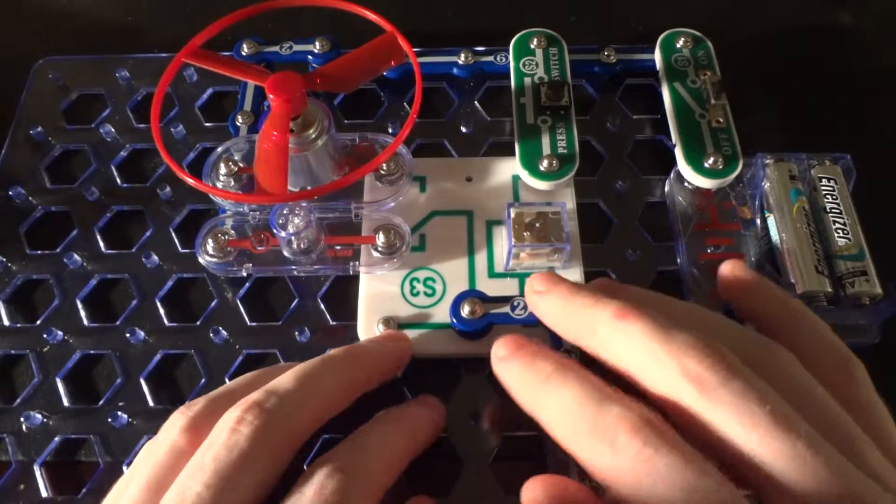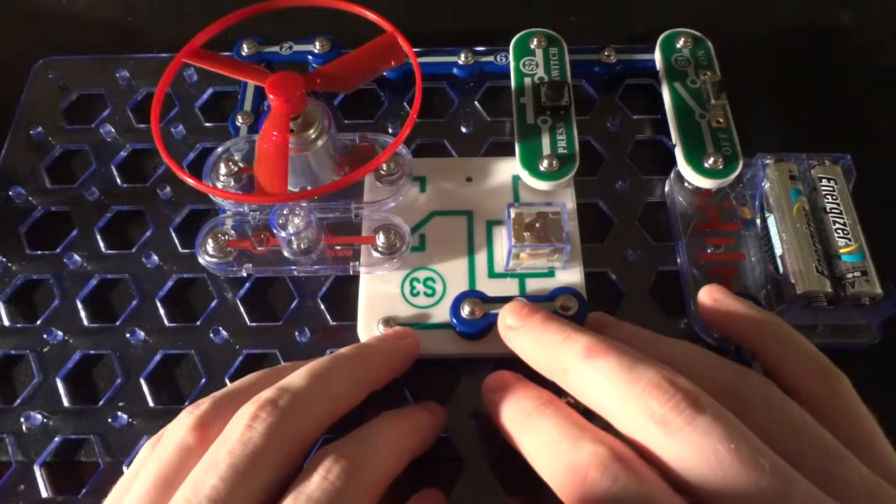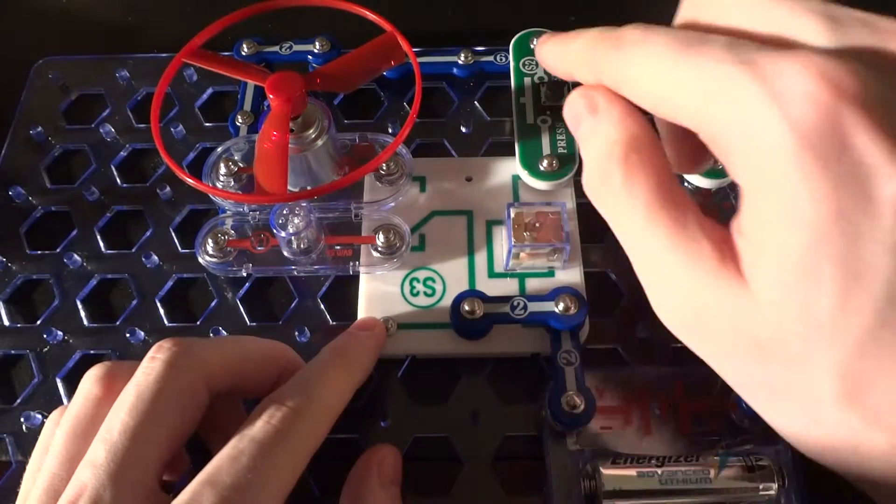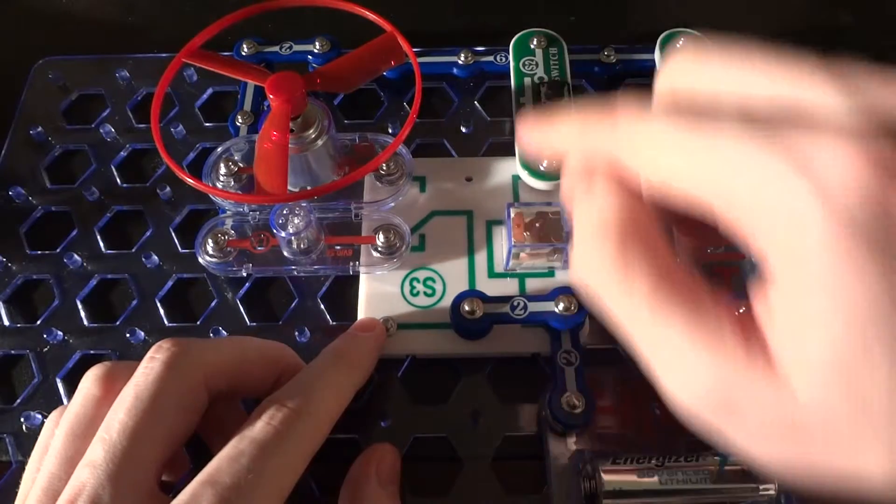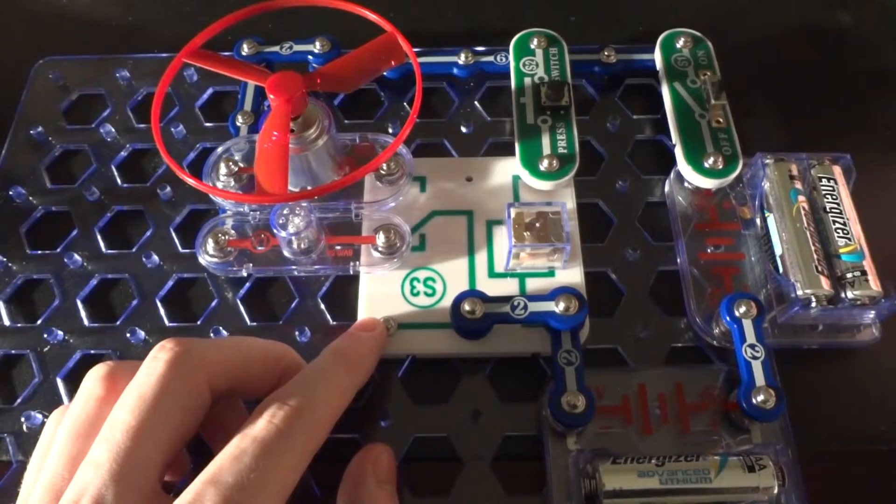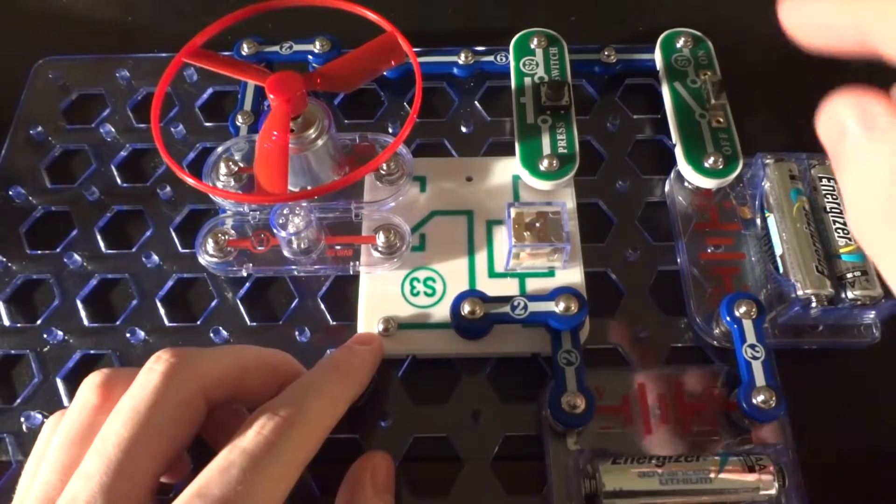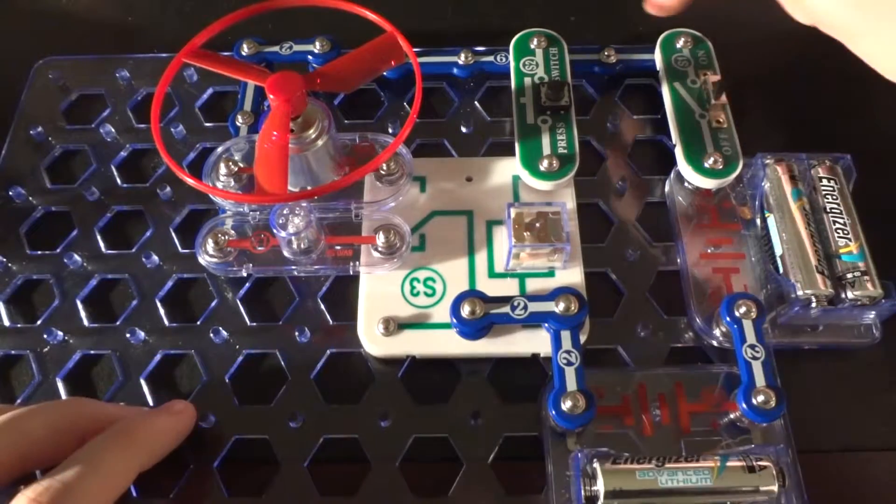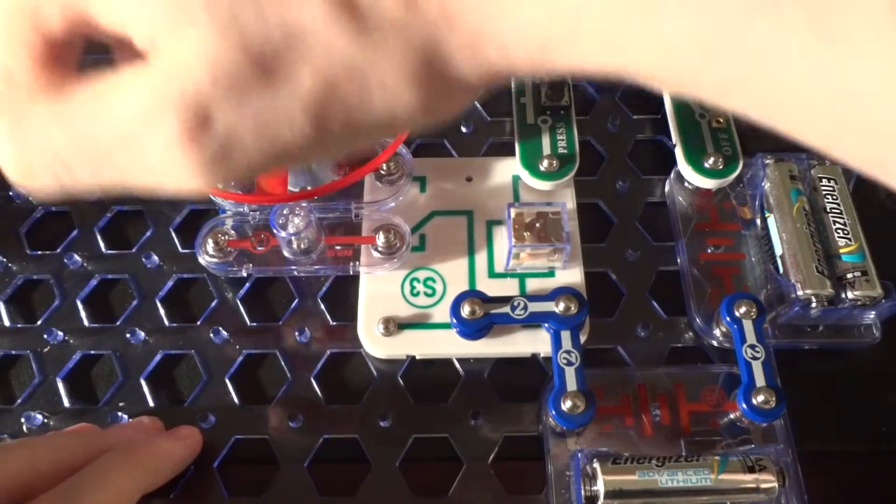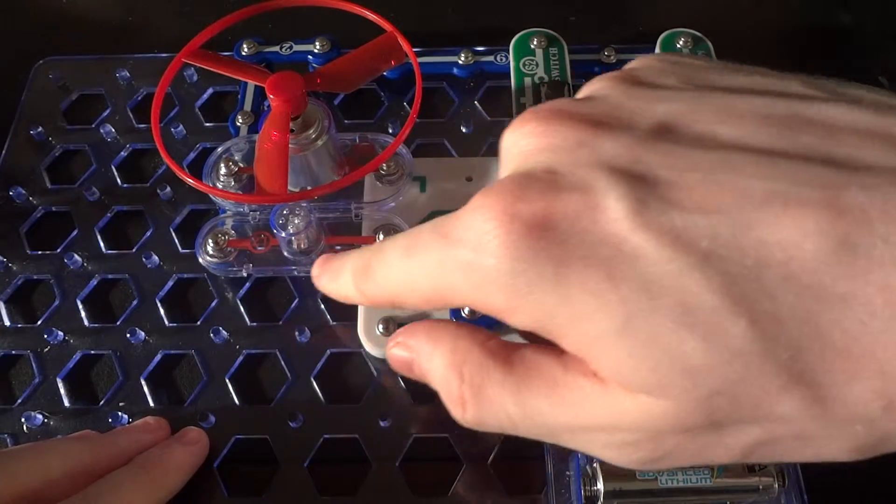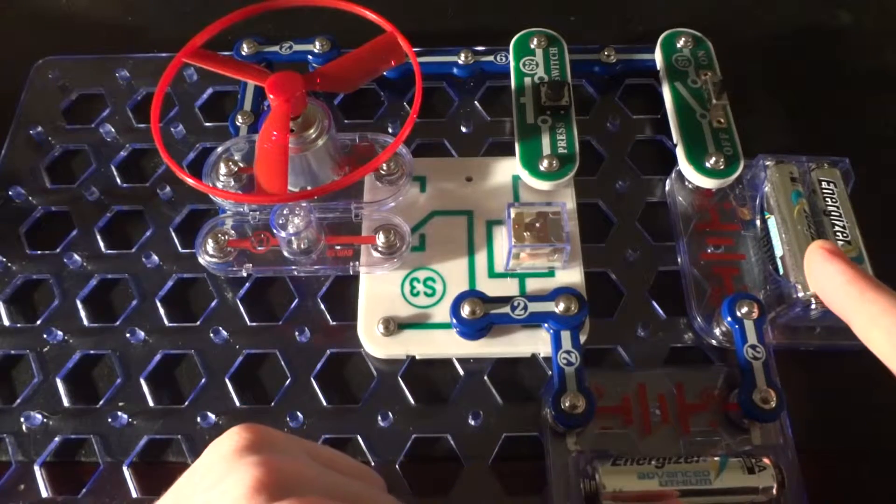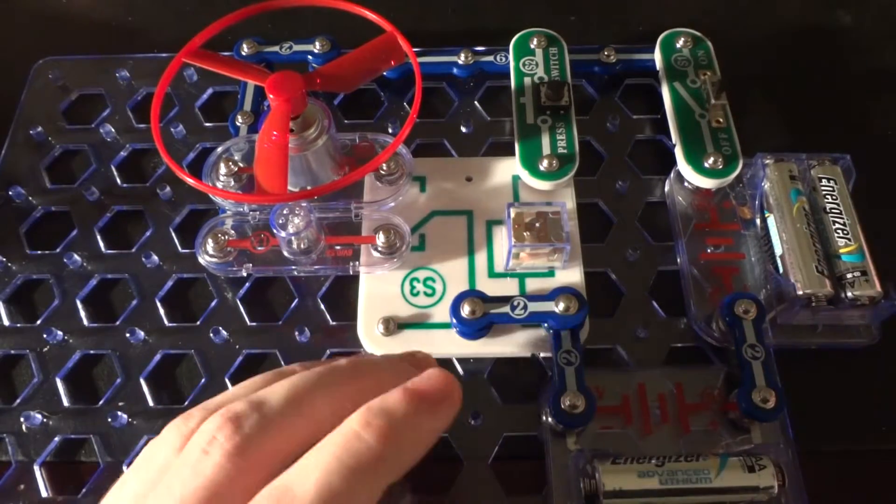This relay is set up to switch between two different loads. I've already pointed out that this button here across the terminals activates the relay. Now, when this circuit is on, normally when I turn on the switch, current will flow through here and it will flow through this six-volt lamp because I've got two three-volt voltage sources in series. So I've got six volts.